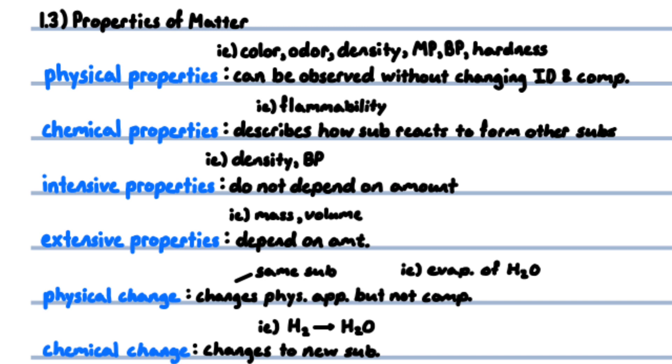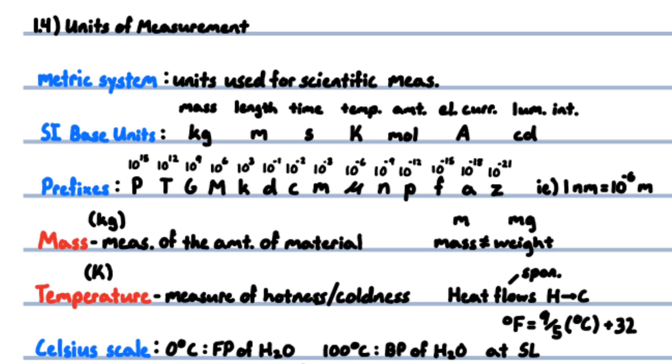When a substance undergoes a physical change, the appearance changes but the composition does not, resulting in the same substance, for example, evaporating water, liquid to gas, still water. When a substance undergoes a chemical change, it changes to a new substance, such as when hydrogen burns in air, it reacts with oxygen to form water. Units of measurement: the metric system consists of units used for scientific measurement. United States has traditionally used the English system with slugs and feet.